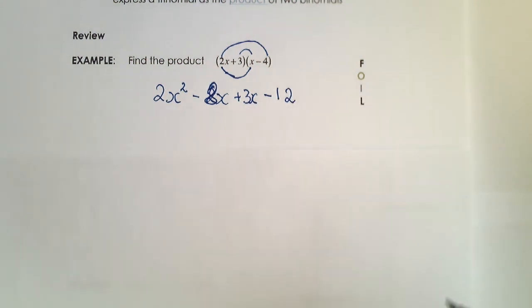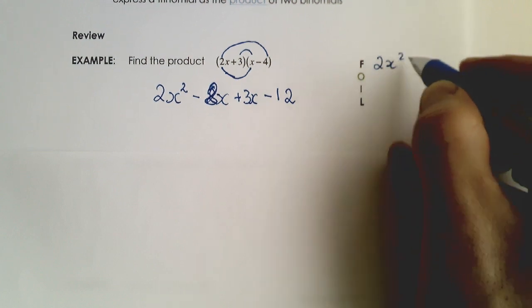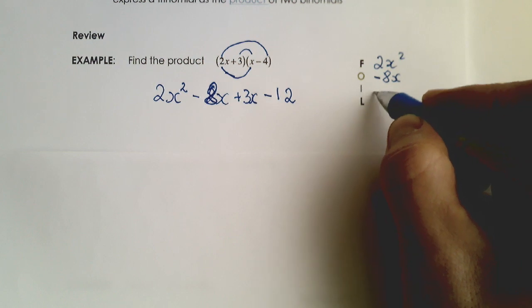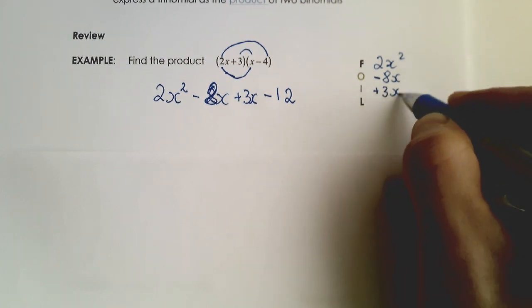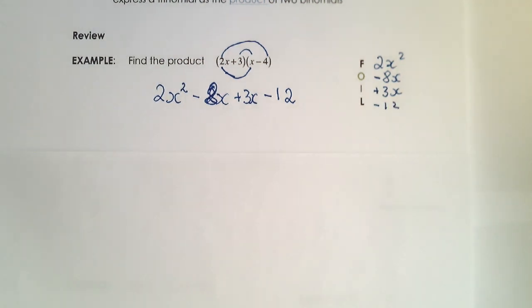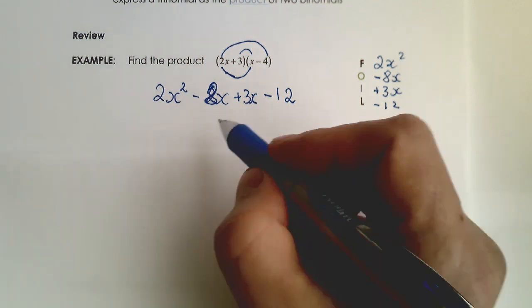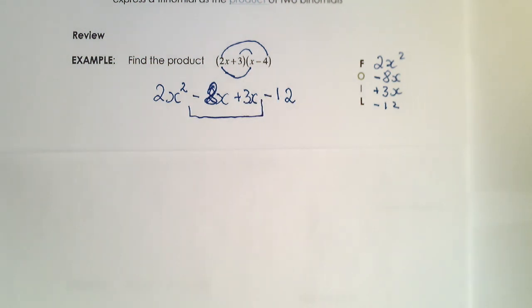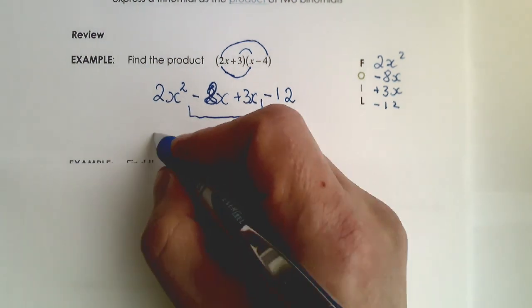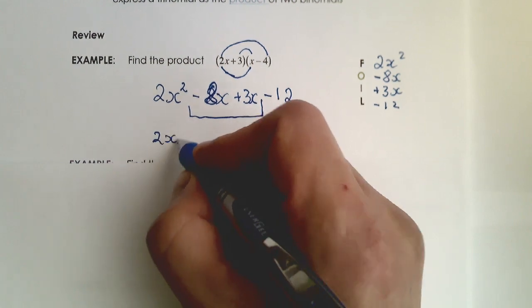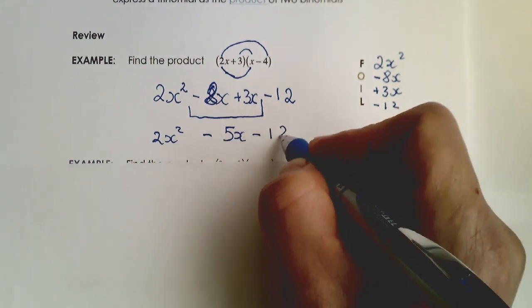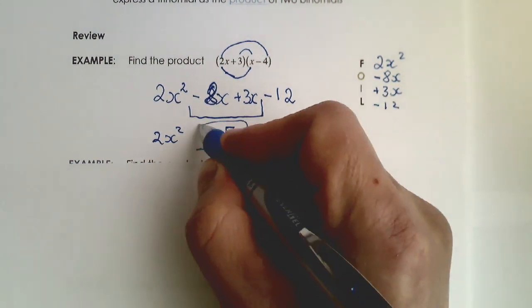So if we list this out, we have 2x squared, the outside term was negative 8x, the inside was positive 3x, and the last one was negative 12. What will be very important in this lesson is the middle term — how to get the middle term of a trinomial. When we simplify, we get 2x squared minus 5x minus 12, and negative 5x is the middle term.